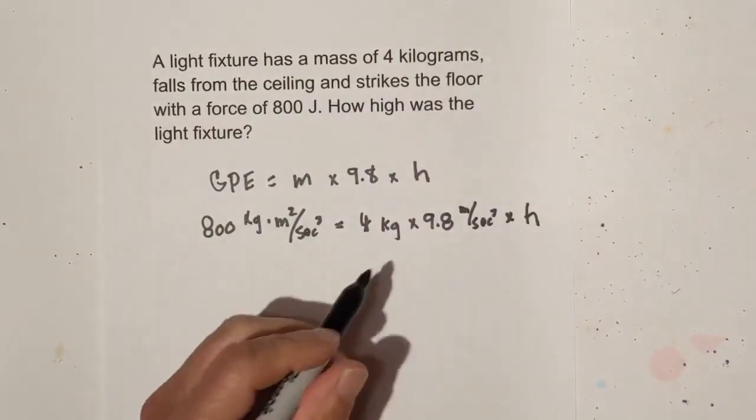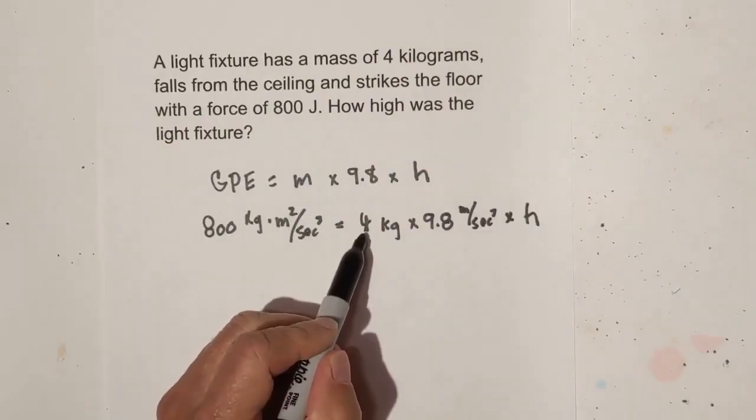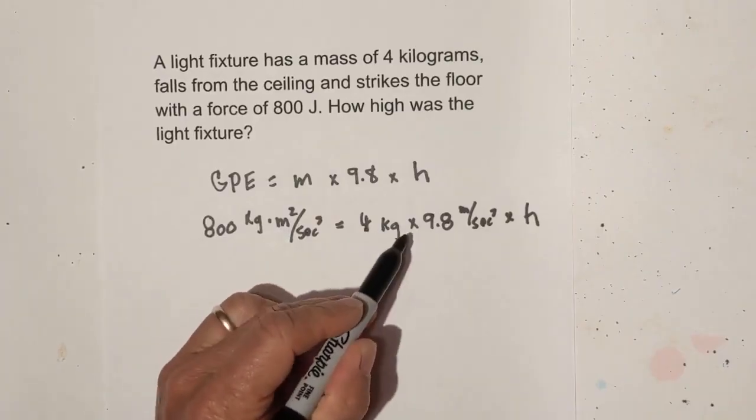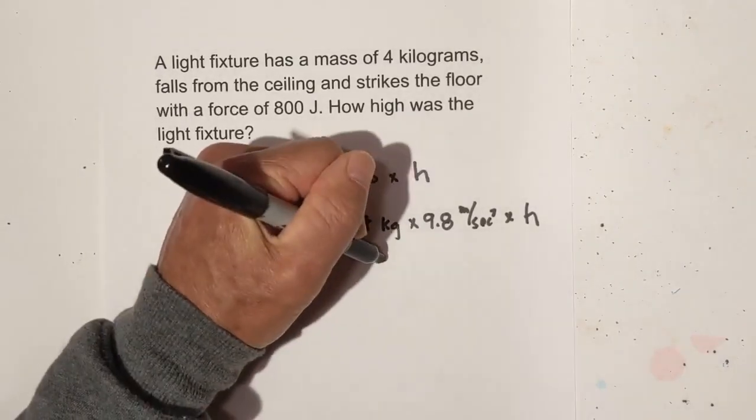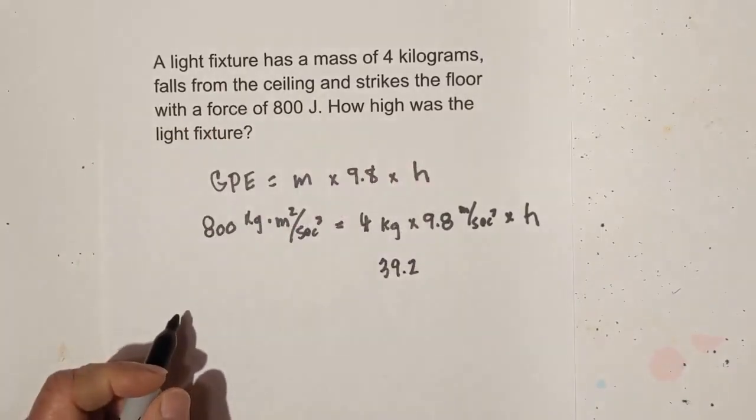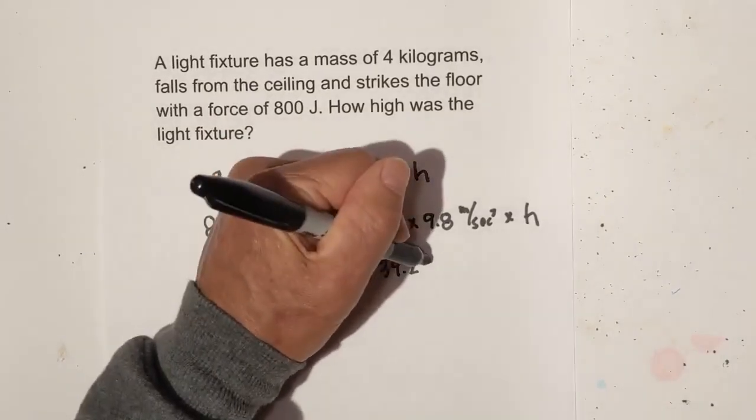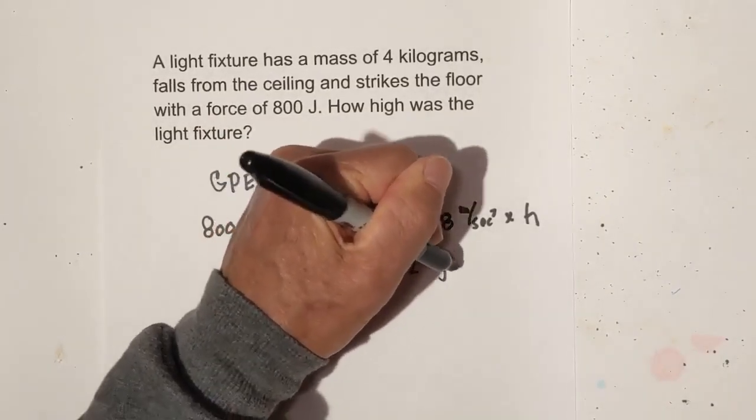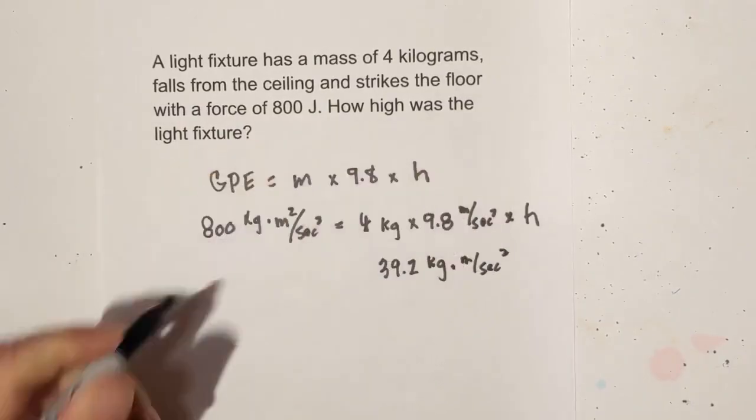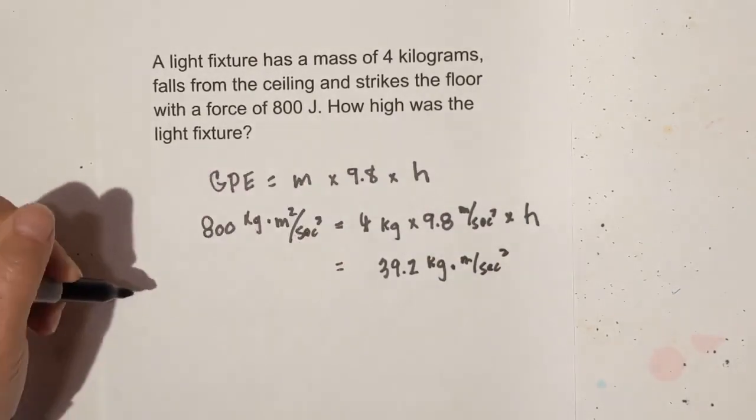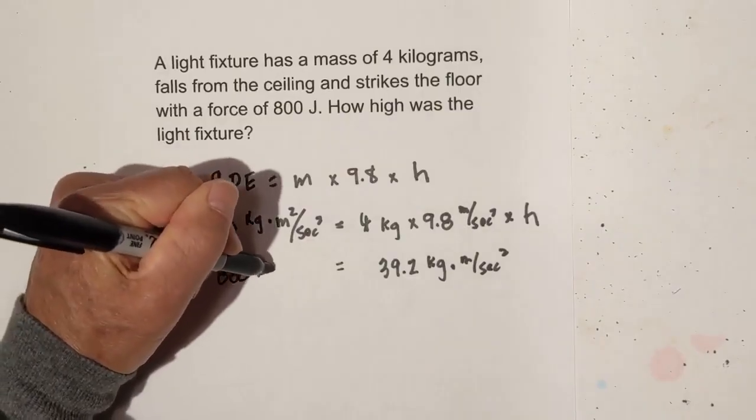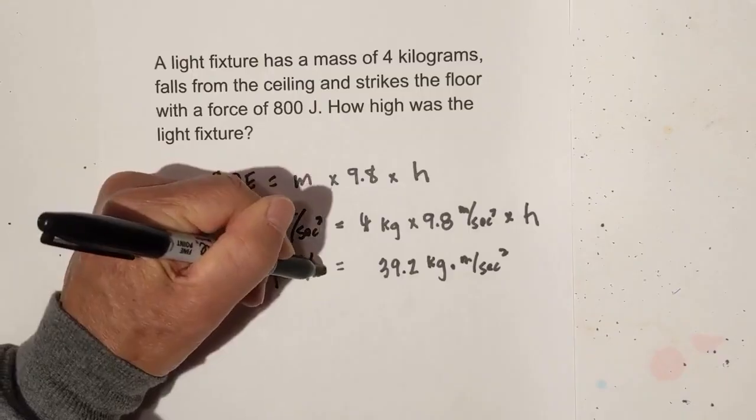Now all we do is just solve. First, we need to take 4 kilograms times 9.8, and when you multiply 4 times 9.8, I've already done this ahead of time, is 39.2. Now let's look at the units. So now we have kilogram times meters per second squared, and that all equals 800 kilograms times meters squared over second squared.